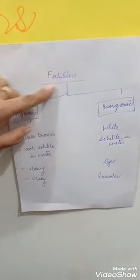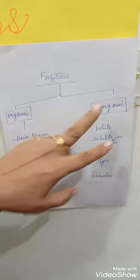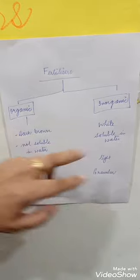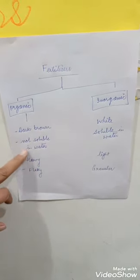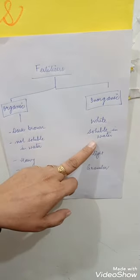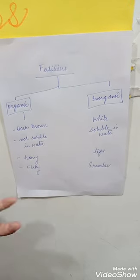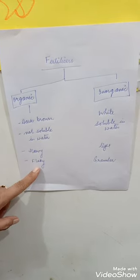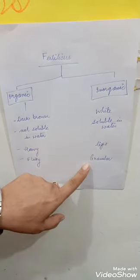Let's sum up. Today we read about fertilizers and the difference between organic and inorganic. Organic is dark brown in color, not soluble in water, heavy, and flaky in texture. Inorganic is white, soluble in water, light in weight, and granular in texture.